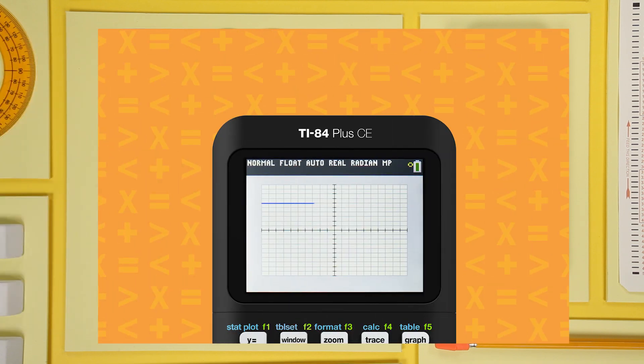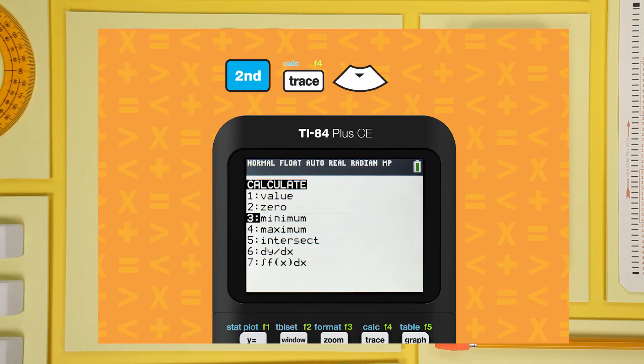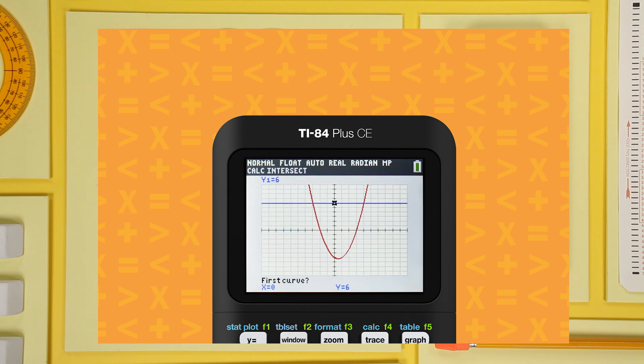Select the graphs. Now, these intersect in two places, so you'll have to move the cursor close to one intersection and then follow the steps again to find the other intersection.